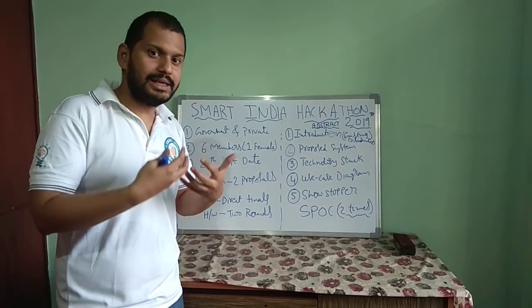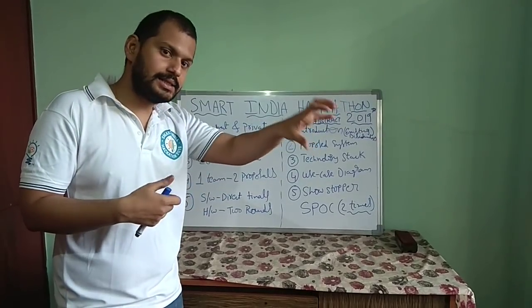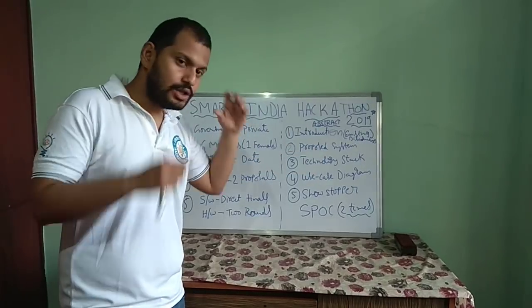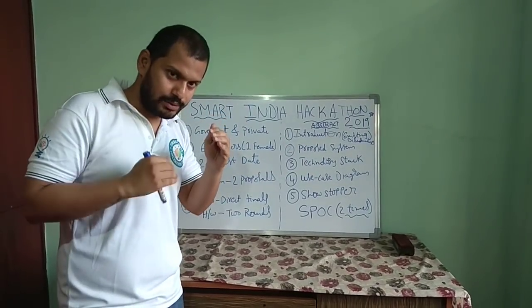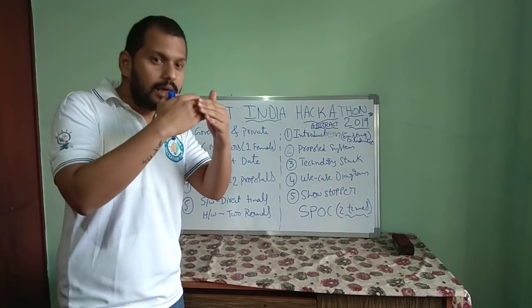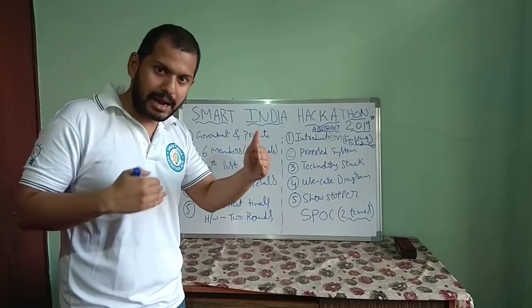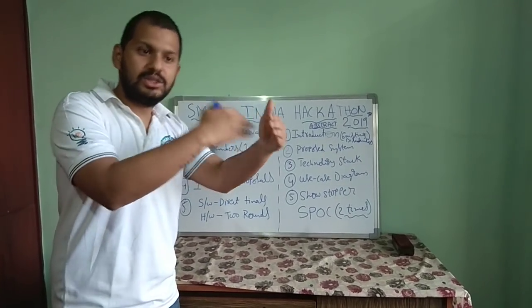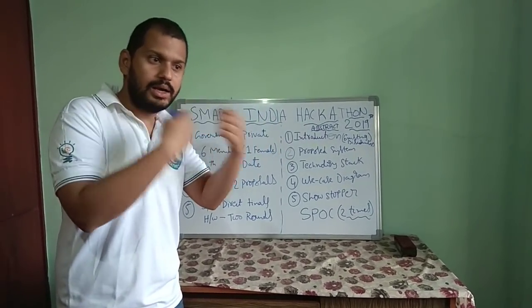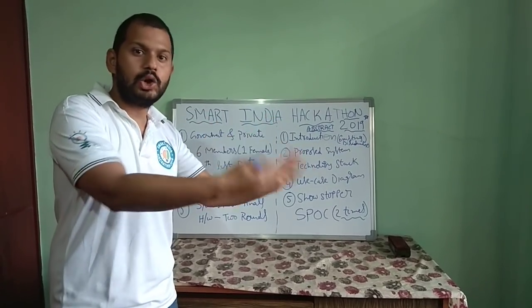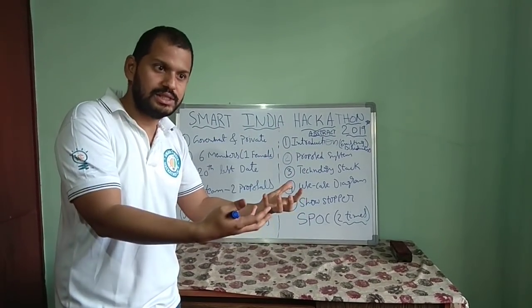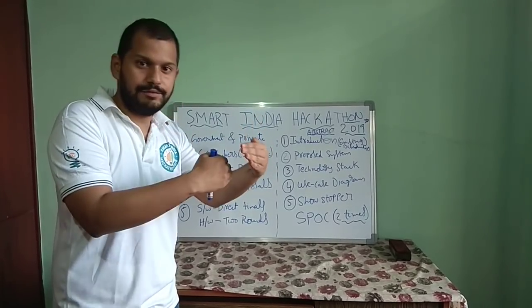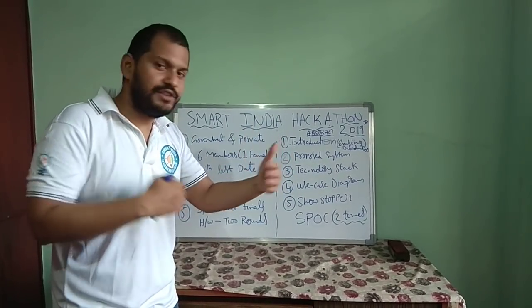Once you look into existing systems, you can understand what the disadvantages of those systems are. After doing the survey, start writing the introduction. In the introduction, give statistics — how much wastage there is, what local solutions exist, and what existing solutions are there. Keep it to three or four lines.